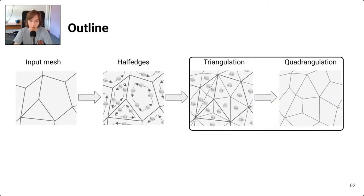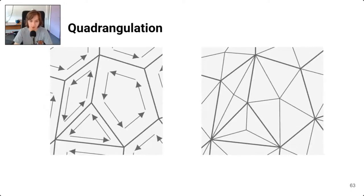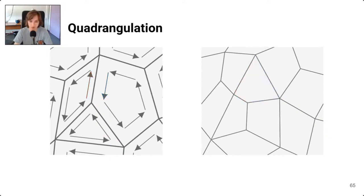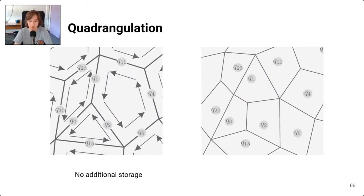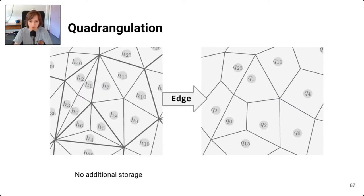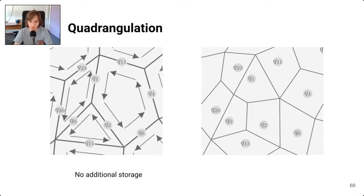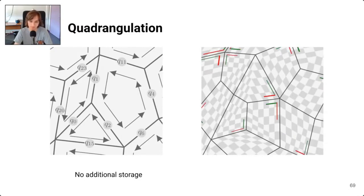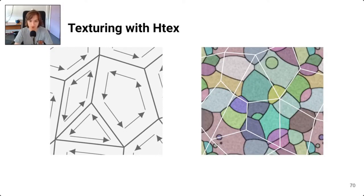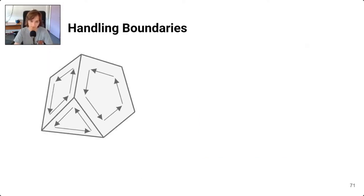To build the quadrangulation from this triangulation, we merge triangles that correspond to twin half-edges — equivalently, triangles that share an edge of the input mesh. This gives a quadrangulation where each edge of the input mesh maps to one quad, again encoded directly by the half-edges with no extra storage. Since half-edges map to triangles and edges map to quads, we can find which quad contains any triangle by applying the edge operator. We then store one texture per quad, enabling texturing of meshes with triangles, quads, and n-gons without UV coordinates.